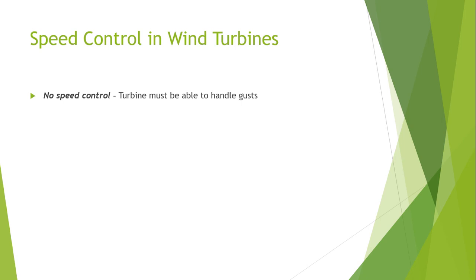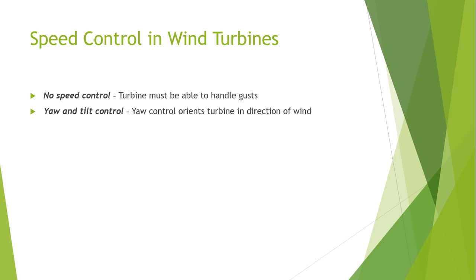Turbine rotational speed and generator speed are the two key areas that must be controlled for power limitation and optimization. You can use different control methods to either optimize or limit the power of your wind turbine. You can control the turbine by controlling the generator speed, or by blade angle adjustment and rotation of the entire windmill. Blade angle adjustment and turbine rotation are also known as pitch control and yaw control respectively.